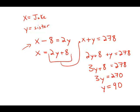We have to be very careful — this is not the answer. This is the weight of the sister. So if the sister weighs 90, and together their weights are 278, we just subtract 90 from 278 and what we get is 188. And this is answer choice E.